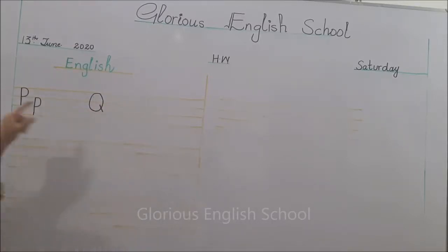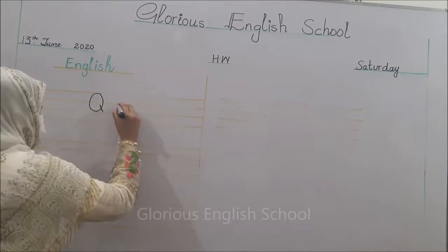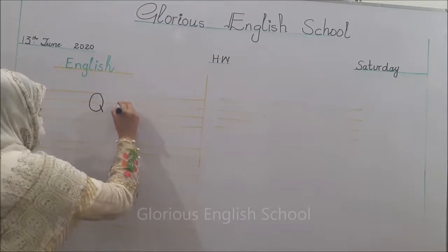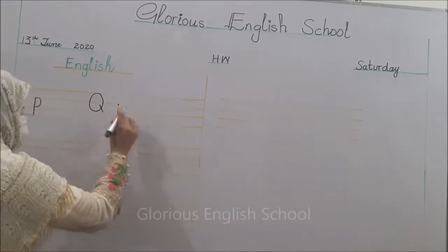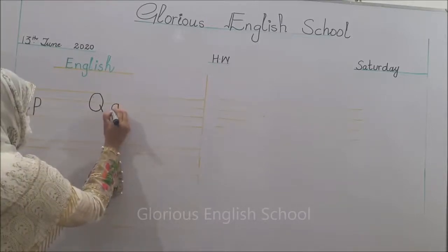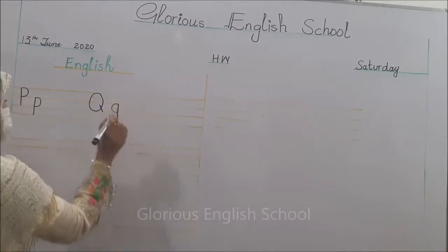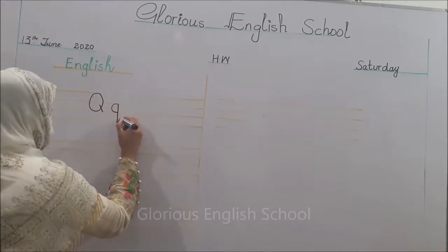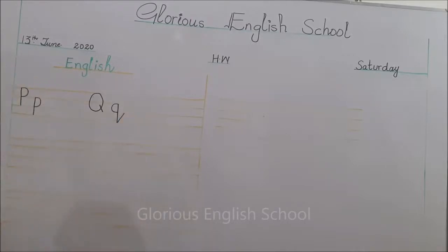Practice करेंगे तो यह बन जाएगा capital Q। अब small q बनाएंगे। Small q के लिए second, third और fourth line में एक standing line draw करेंगे। फिर इसको curve बना देंगे और छोटी सी slanting line draw कर देंगे तो यह बन जाएगा q। P, Q।